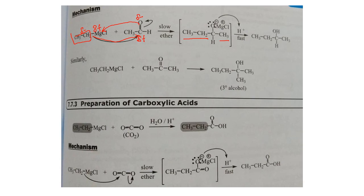After the reaction with ethanal, since there is one carbon on each side (1,2-ethanediol framework), the product is a secondary alcohol. Check: the carbon attached to the OH has two carbon substituents — one from the Grignard (CH2CH3) and one from the aldehyde (CH3) — confirming it is secondary alcohol.